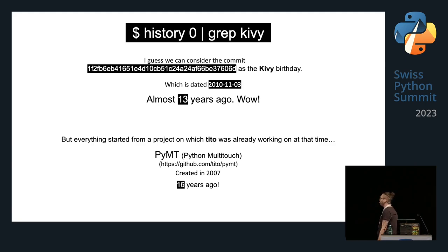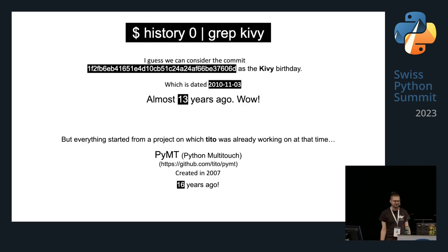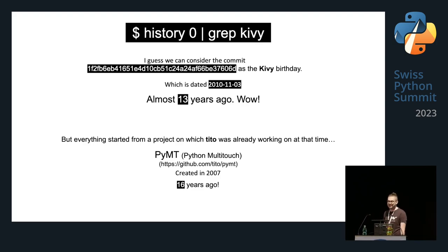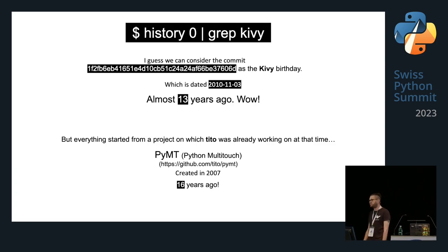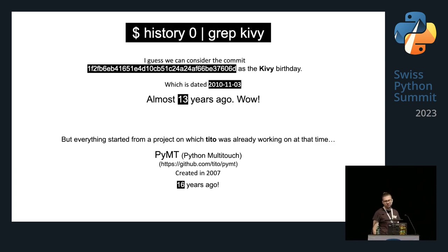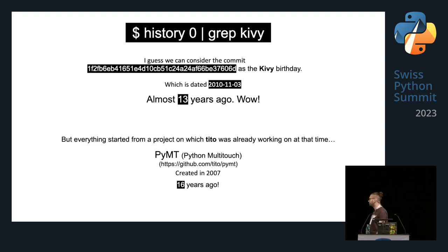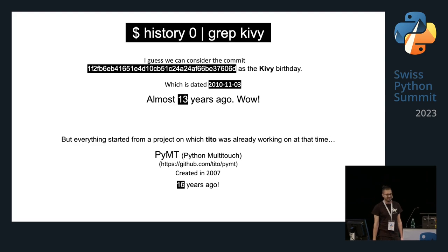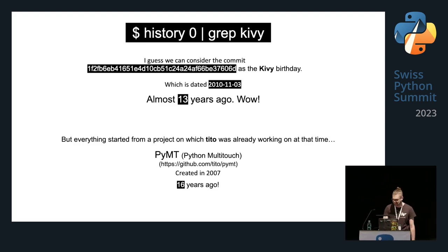Let's start with some history about Kiwi. We can consider this commit as the Kiwi birthday — almost 13 years ago. But everything started with the project Mathieu Viabelle was working on at the time, which is PyMT — Python Multitouch. Python Multitouch was created in 2007, 16 years ago. I was 12, 16 years ago.